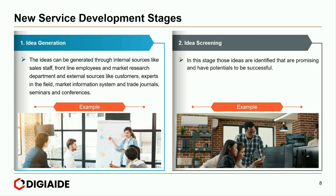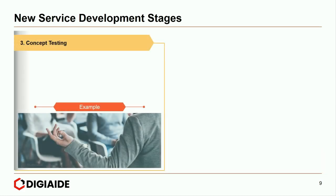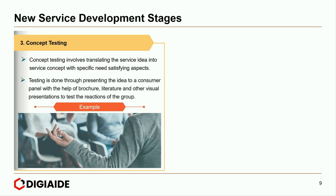The next is idea screening. In this stage, those ideas are identified that are promising and have potential to be successful. The evaluation committee screens various service ideas rigorously to ensure they are consistent with the company's mission, image and capability. Moving on to stage three, concept testing — this involves translating the service idea into a service concept with specific needs-satisfying aspects. Testing is done through presenting the idea to a consumer panel with the help of a brochure, literature and other visual presentations to test the reactions.